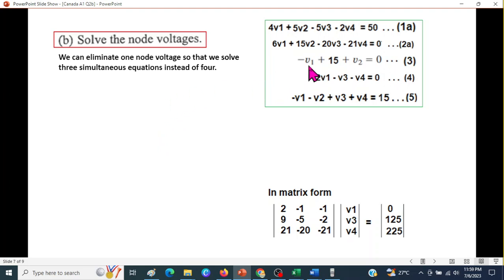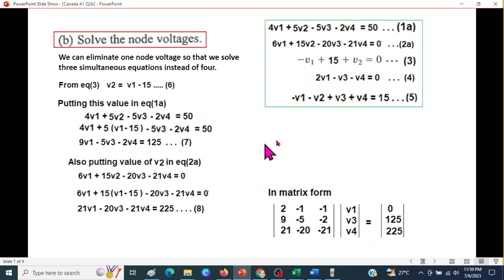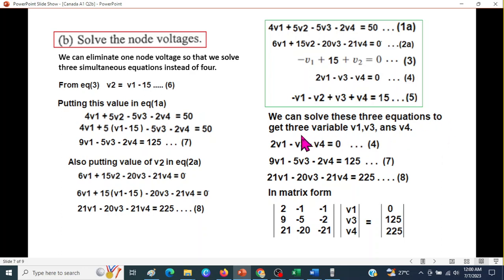And how do we eliminate one of the variables? From here, you can see. From equation 3, V2 is equal to V1 minus 15. So, we can eliminate all the V2s in these equations. So, from equation 1A, eliminating V2, by putting the value of V2, we get equation number 7. Similarly, in equation 2A, we eliminate V2 here. So, we get equation number 8. So, now we have one equation here, one, this one and the equation number 4 does not have V2. So, we will take that as well.